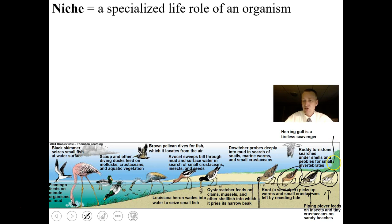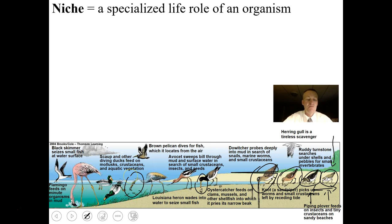The smaller shorebirds run back and forth every time a wave crashes and dig up small things from the surface. Something like the dowitcher has a longer beak and exploits a different part of the shoreline. Oyster catchers have really thick beaks and can actually break open mussels, clams, and oysters. The heron has a spear-like beak so it can spear fish.